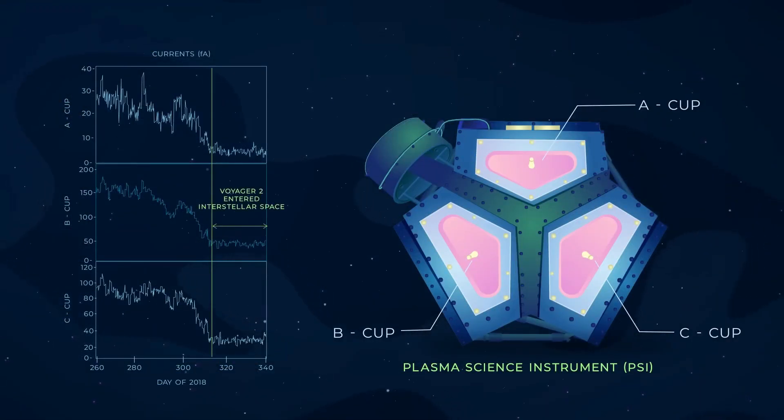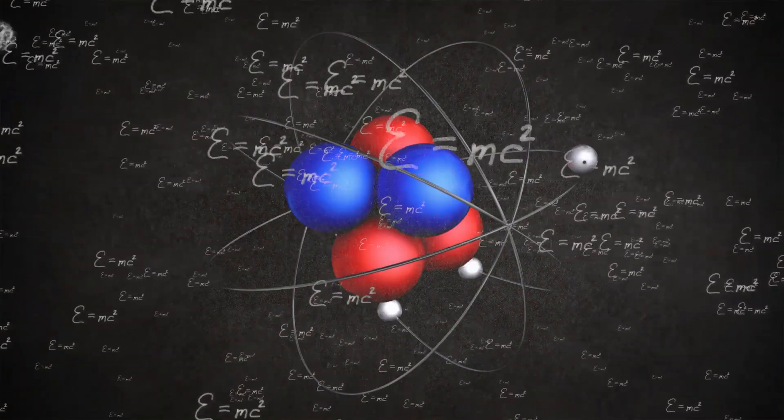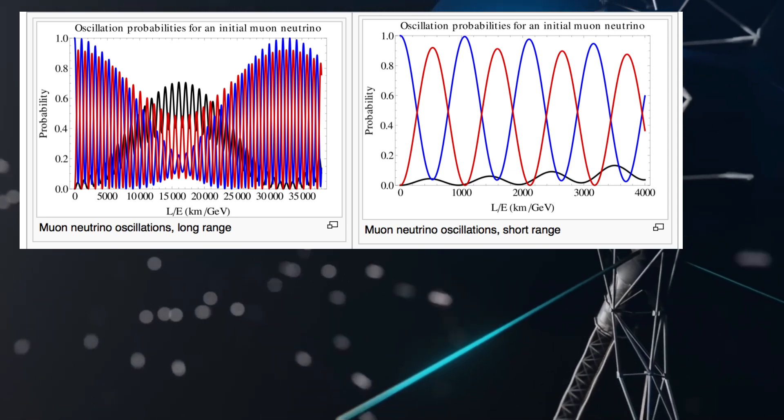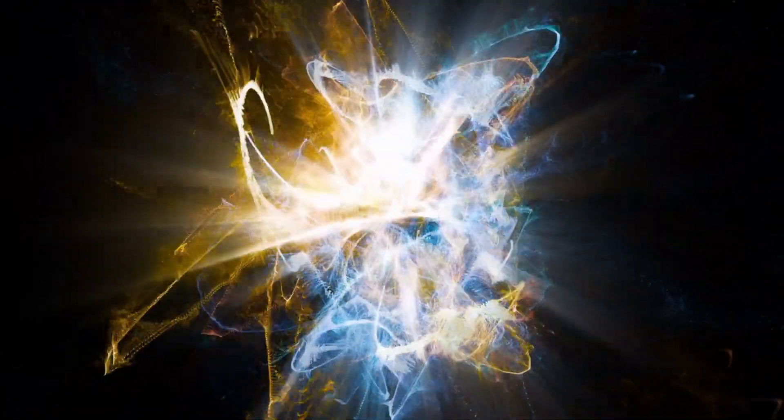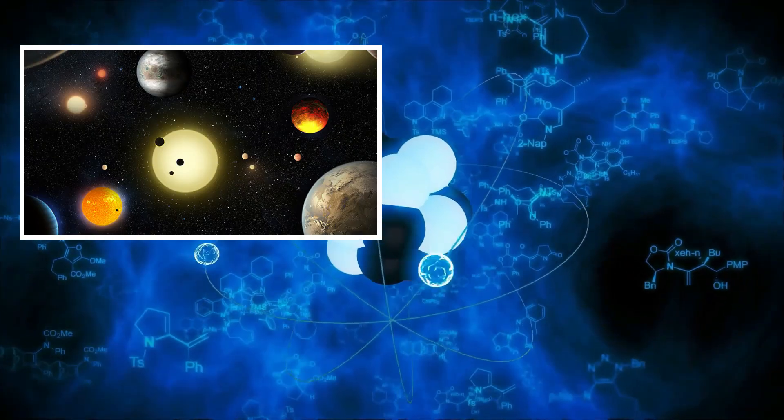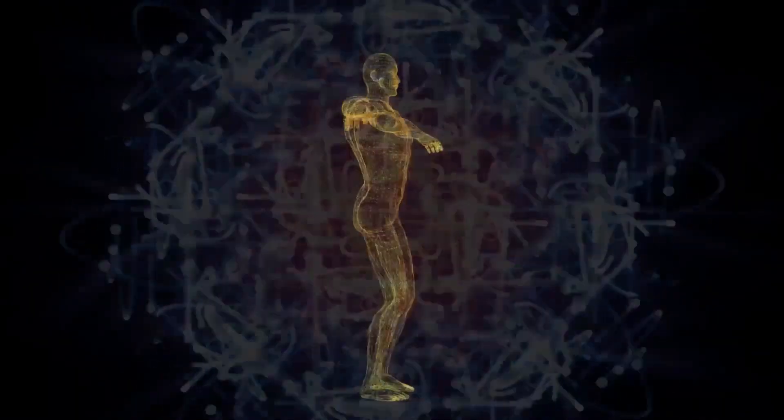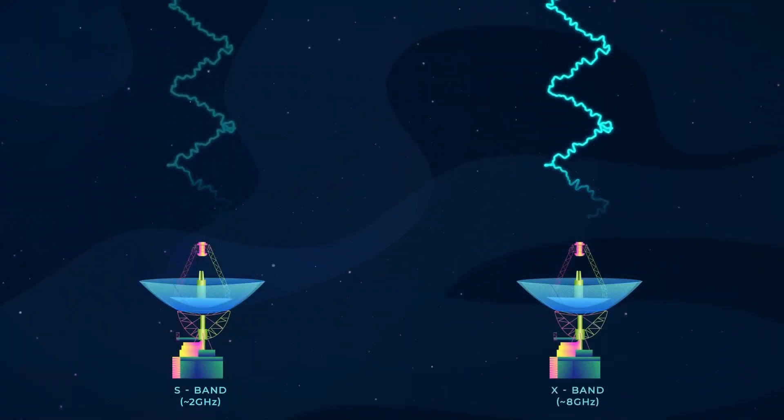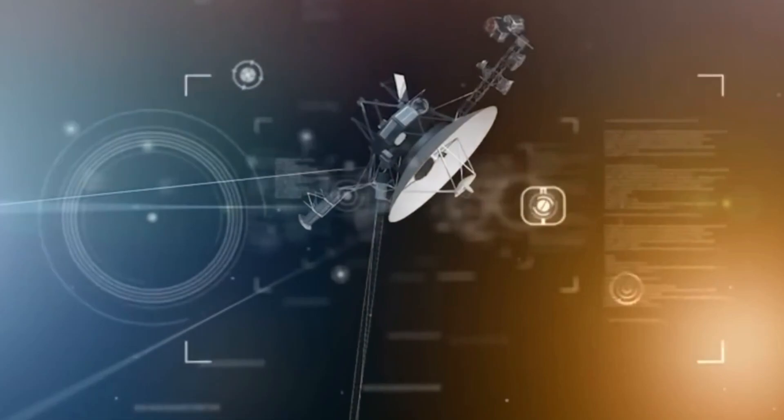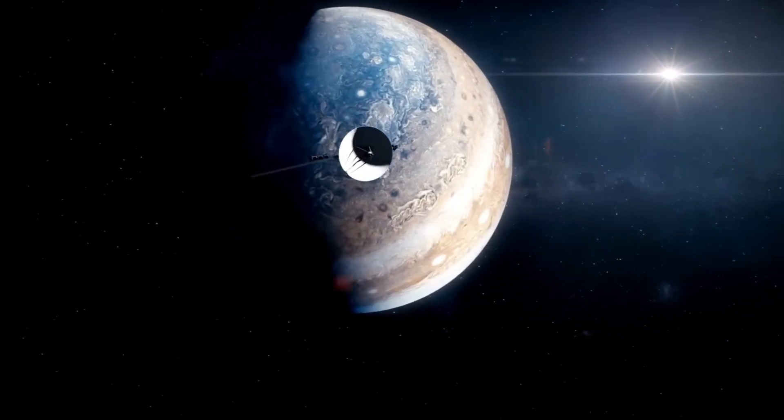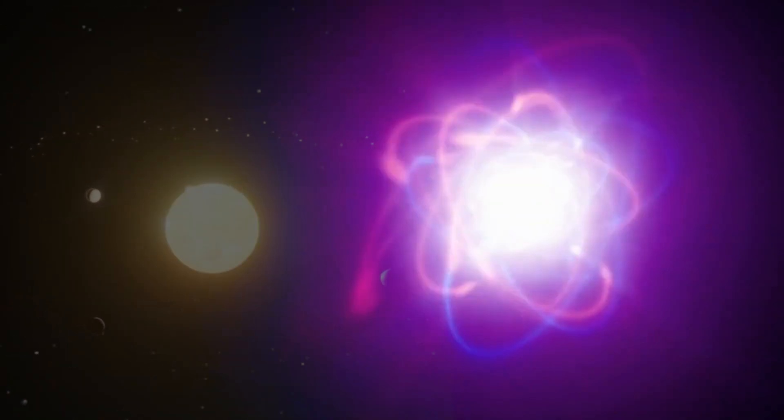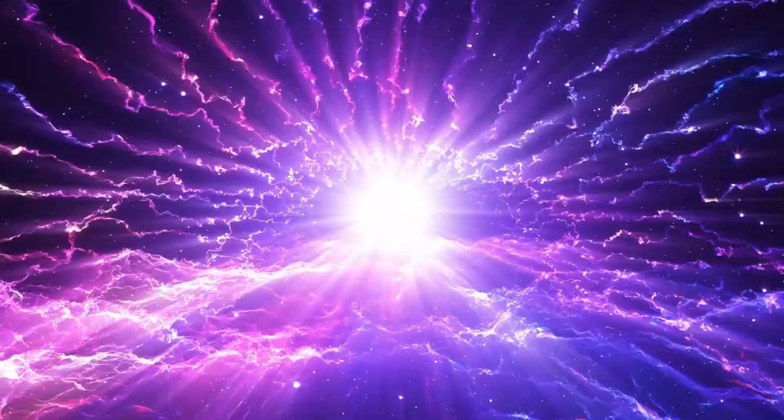Voyager 1, the farthest human-made object in existence, has sent back one final mystery before its systems fail forever. A structured neutrino pattern, something it should never have been able to detect, was embedded in its last transmission. Was this a glitch, a cosmic coincidence, or something far greater? The scientific world is divided. Some believe this could be the first glimpse of a new fundamental force, evidence of sterile neutrinos, or a sign of deep space physics we've never encountered before. Others speculate that Voyager 1 may have intercepted a signal, whether from a natural celestial event or something more deliberate. But there's one undeniable fact: this pattern is not random.